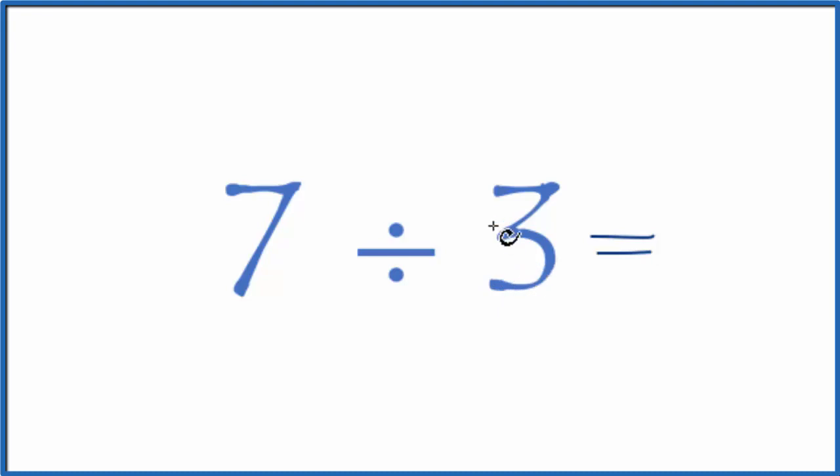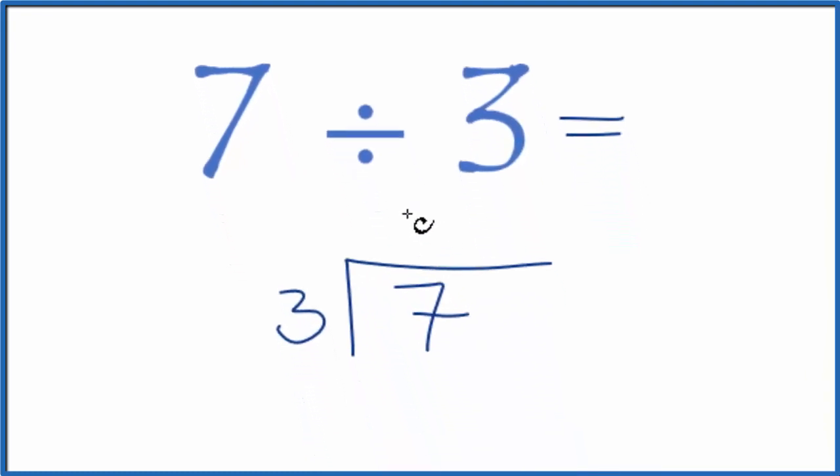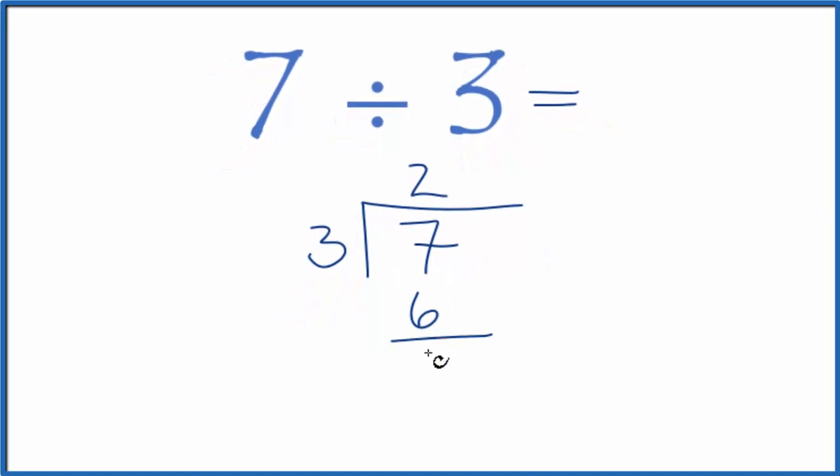We can divide 7 by 3. Let's put our 7 right here and we want to see how many times 3 goes into 7. So 2 times 3 is 6 with 1 left over. 3 doesn't go into 1.